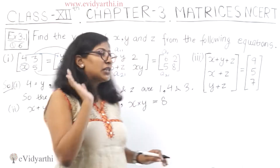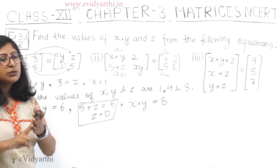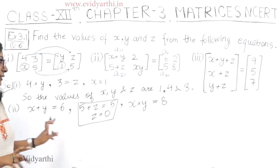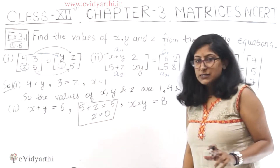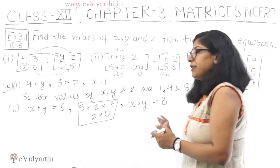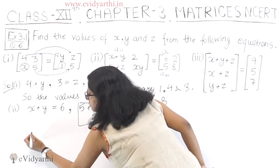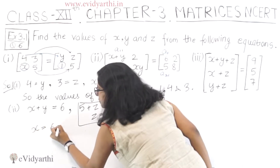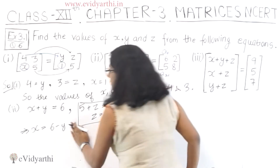If you have studied the quadratic equation in previous classes, this will form two numbers when the sum and product are given. We will solve the quadratic equation. You can also make a quadratic equation, or you can also use elimination. Here we have to calculate x's value — it will be x is equal to 6 minus y.